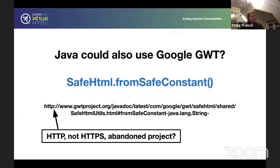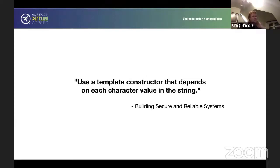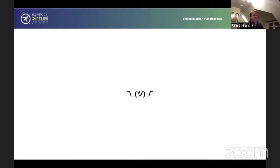There is also for Java, a project called Google GWT, where there is a safe HTML from safe constant method. I couldn't get this working. And I have a feeling this project might have been abandoned quite a while, considering they haven't actually even updated it to use HTTPS, which for a Google project is questionable. With C++, I couldn't really work out how they were doing it. If you're looking at the building secure and reliable systems book that I mentioned at the beginning, they do make the statement of using a template constructor that depends on each character value in the string. That was it. That's all they said. I have no idea what they mean by that. And also, Google have a document saying about using safe HTML types as an overview. And this was basically the statement they made. And that was it. So I'm just going to go, meh. I've got nothing to get with that.